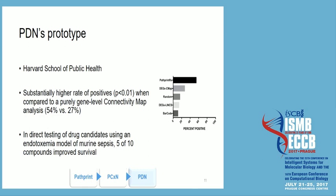Additionally, there has been direct testing in drug candidates in the sepsis model from the paper mentioned before, where 5 out of 10 compounds actually improved survival. This is not something concrete yet, but it's a good sign for PDN.